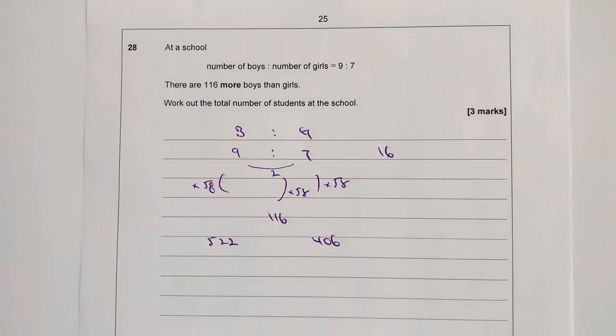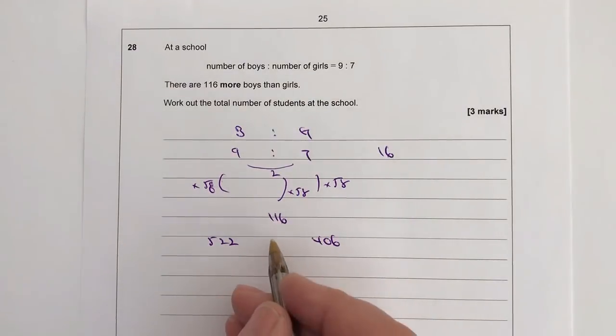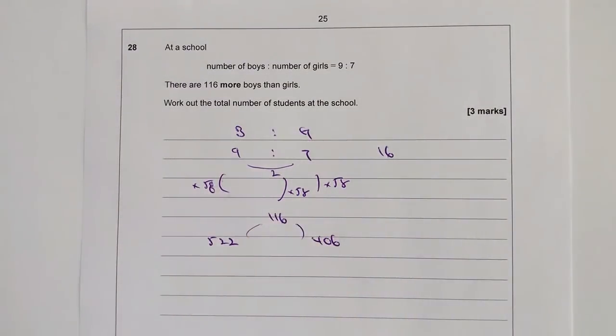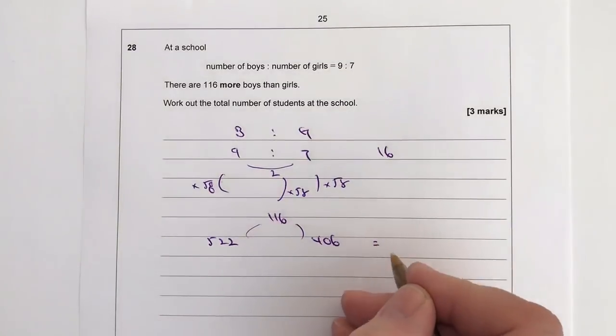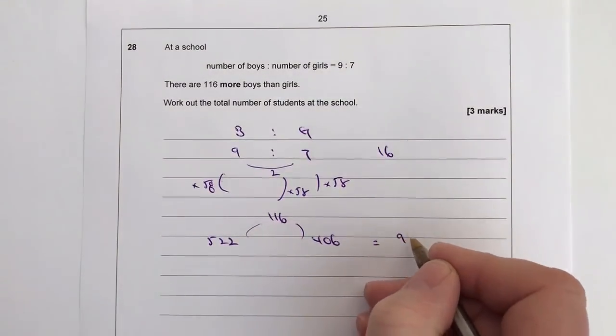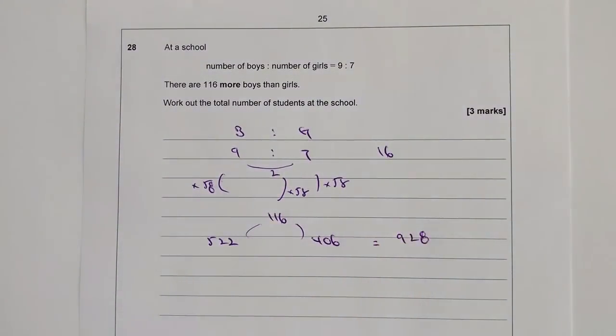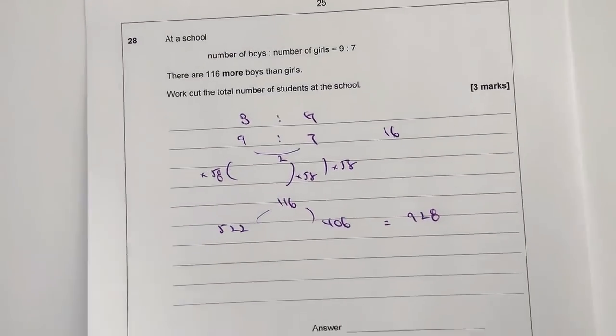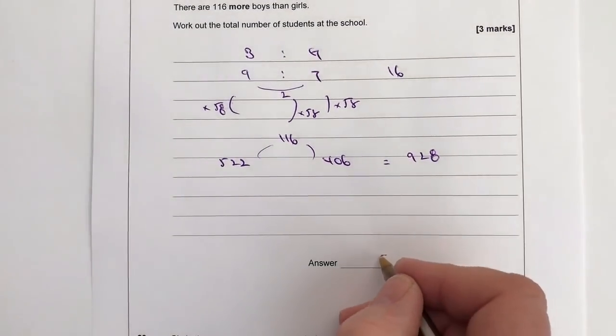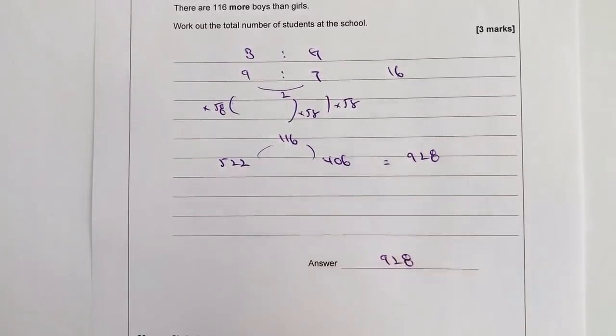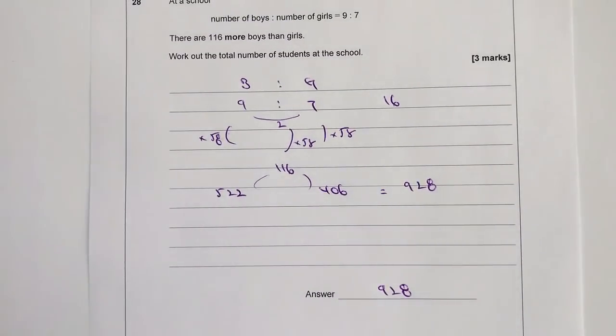So in other words, if I want to work out the total number of students in the school, I've got 522 boys and 406 girls, and the difference between the two is going to be 116. So if I add those two together, it means I'm going to get 928 students in the school altogether. So the answer to my particular question is 928.